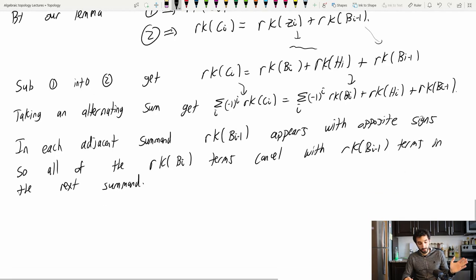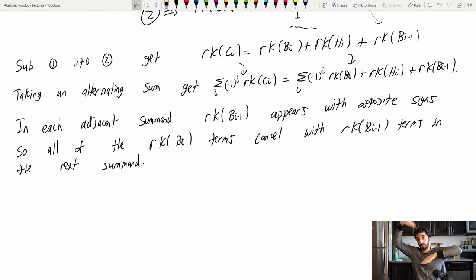So all of the rank Bi terms cancel with the rank of Bi minus one terms in the next summand. So all those terms go away. And this only goes up to a finite amount of height. You might worry that you'll be limiting to something, but this is a finite CW complex.